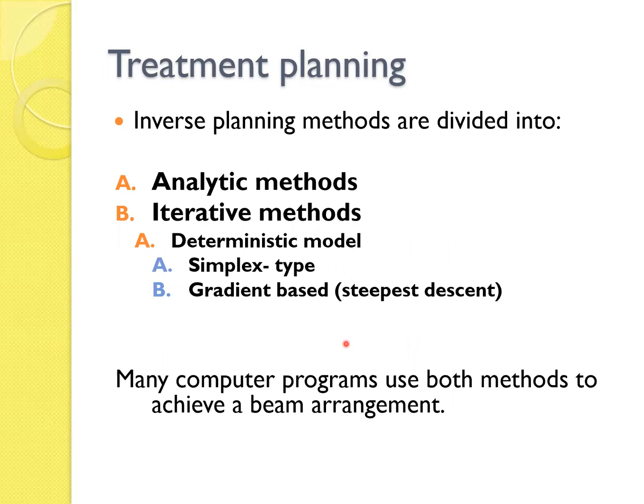Inverse planning method are divided into two: analytic method and iterative method. This is an old method, it's now not in use, whereas iterative method is still defined in most of the planning systems. So in iterative method, it could use a deterministic model. There are two types of deterministic models: simplex type or gradient-based steepest descent. Still, very old versions before Varian 16 used gradient-based method for the IMRT. Many computer programs use both methods to achieve beam arrangement.